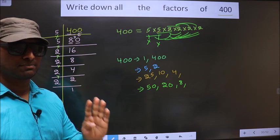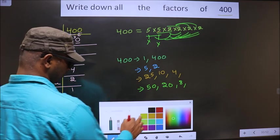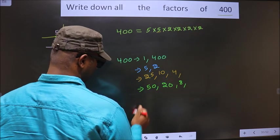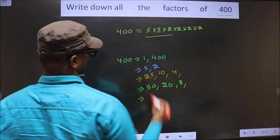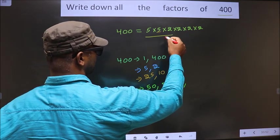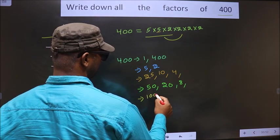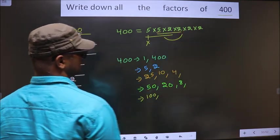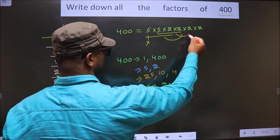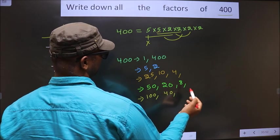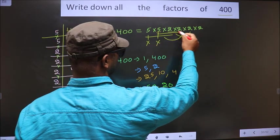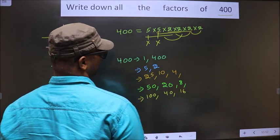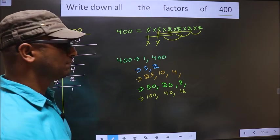Now take combinations of 4 numbers. Fix 5, 5, and 2: 5 × 5 is 25, 25 × 2 is 50, combined with 2 gives 100. Leave one 5; take 5, 2, 2: 5 × 2 is 10, 10 × 2 is 20, combined with 2 gives 40. Leave both 5s; take 2, 2, 2: 2 × 2 is 4, 4 × 2 is 8, 8 × 2 is 16. No other combination possible.